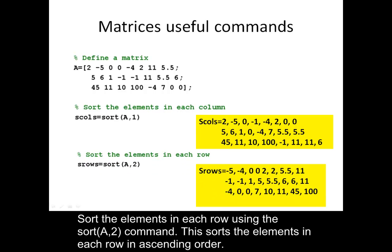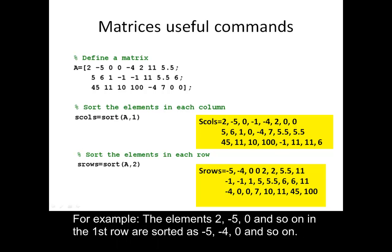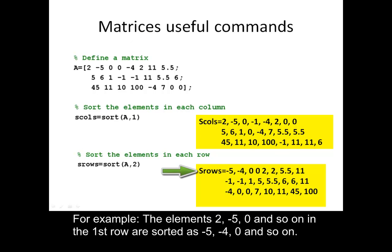Sort the elements in each row using the sort(A,2) command. This sorts the elements in each row in ascending order. For example, the elements 2, minus 5, 0, and so on in the first row are sorted as minus 5, minus 4, 0, and so on.